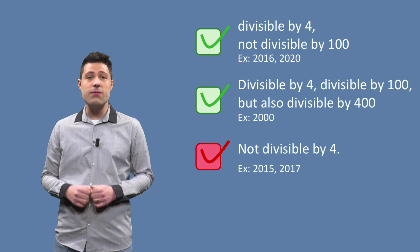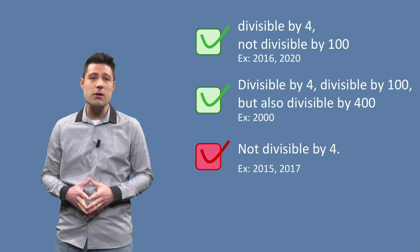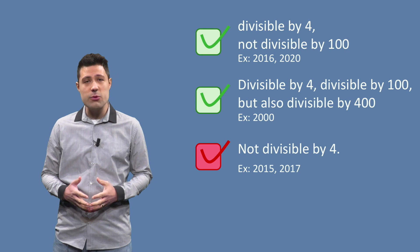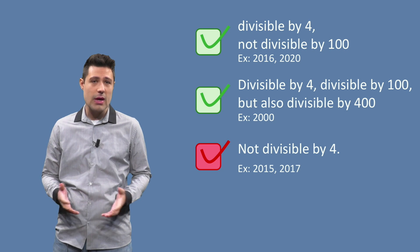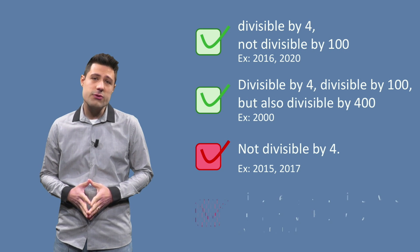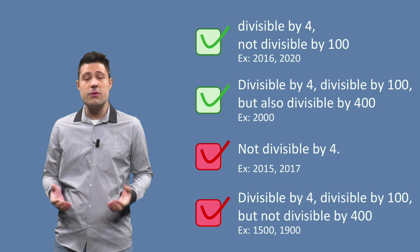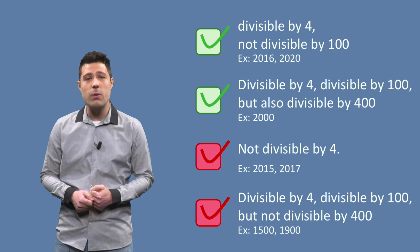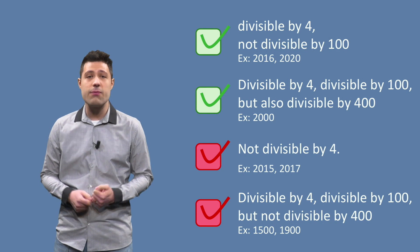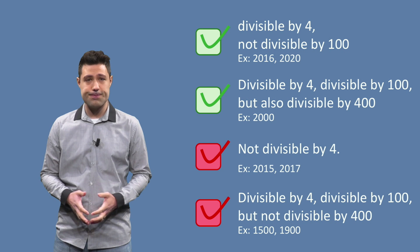Years that are not divisible by 4 — the program should return false. As well as if the year is divisible by 4, divisible by 100, but not divisible by 400 — also false.